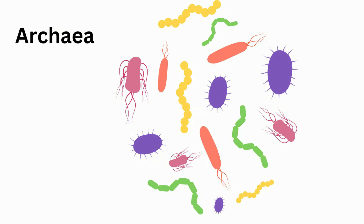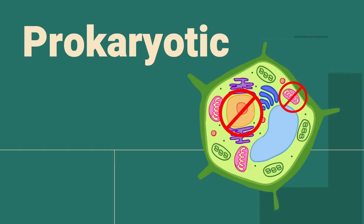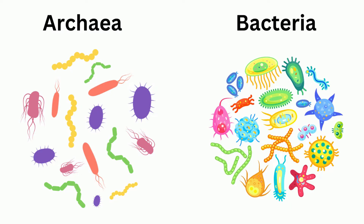Unicellular cells can be either prokaryotic or eukaryotic. Prokaryotic cells do not have an organized nucleus or membrane-bound organelles like a mitochondria. The kingdoms Bacteria and Archaea are made up exclusively of unicellular prokaryotic cells.